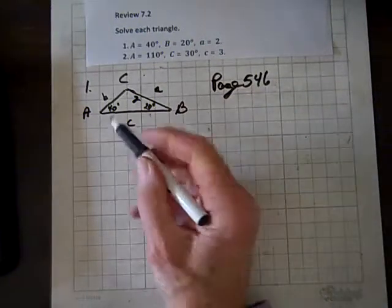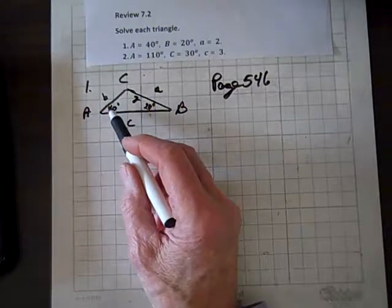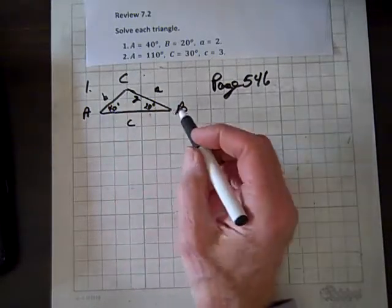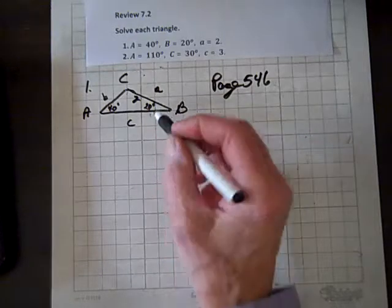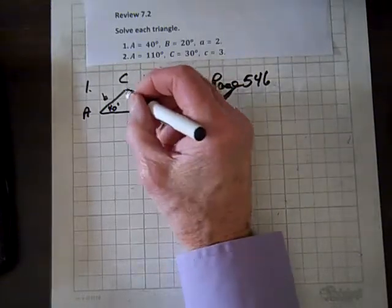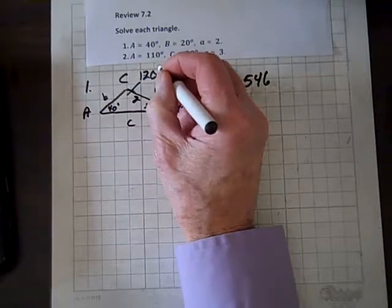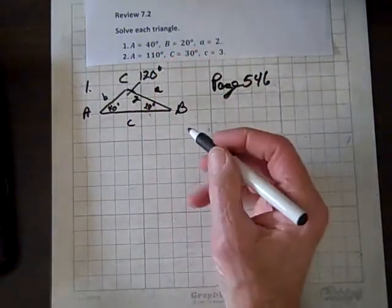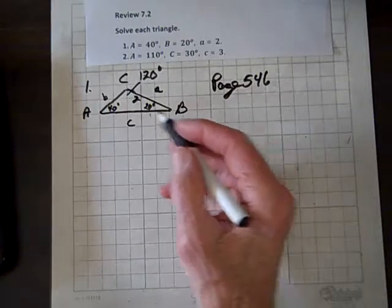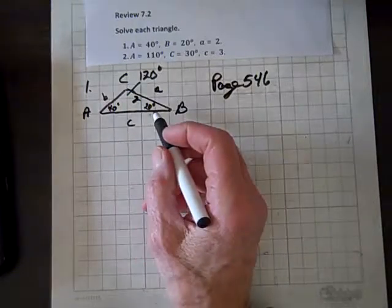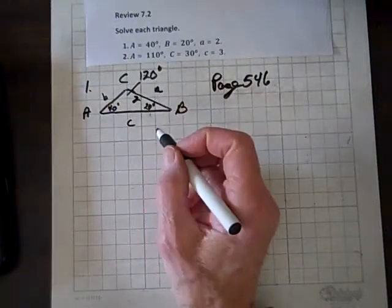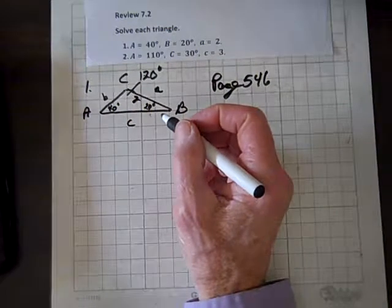We're given two angles: angle A is 40 degrees and angle B is 20 degrees. So we know the measure of the third angle has to be 120 degrees, because the sum of the angles of a triangle must add up to 180. 40 plus 20 plus 120 equals 180.